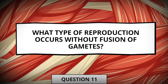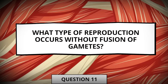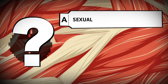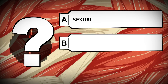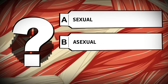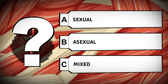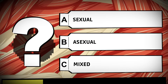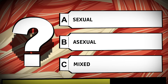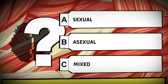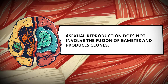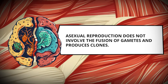What type of reproduction occurs without fusion of gametes? Sexual. Asexual. Mixed. Asexual reproduction does not involve the fusion of gametes and produces clones.